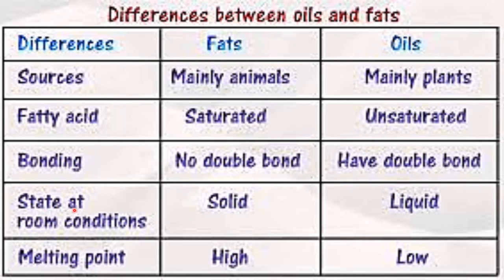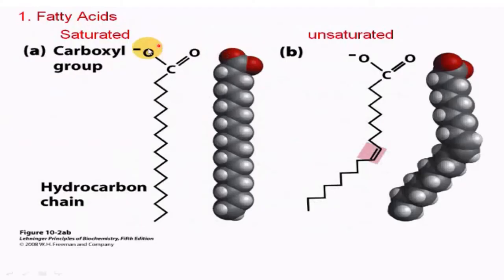At room temperature, fat will be in a solid state whereas in case of oil it will be in a liquid state. The melting point in case of fat is high, whereas oil is low because it is already in a liquid form.